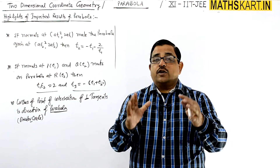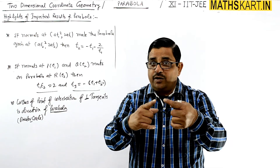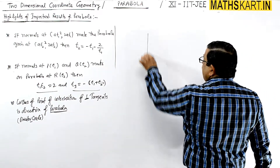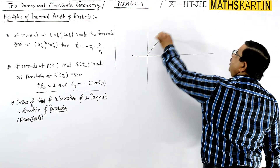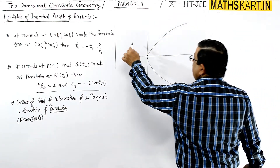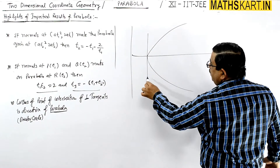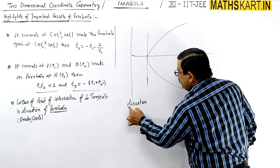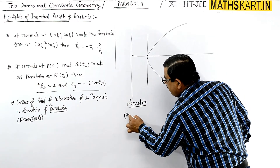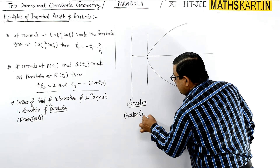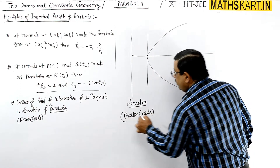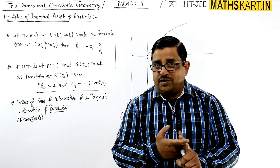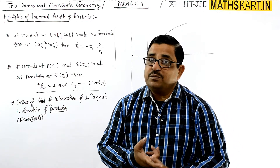The common condition is: it is the locus of the point of intersection of perpendicular tangents. But in the case of the parabola, if you find all perpendicular tangents, they all meet at the directrix — a straight line. Because it comes out as a straight line, it is not called the director circle, but follows the same definition.